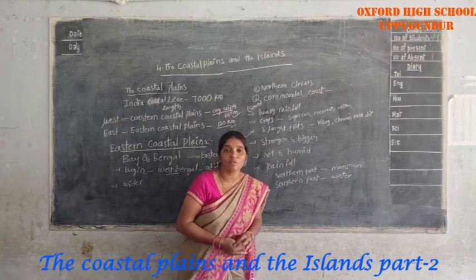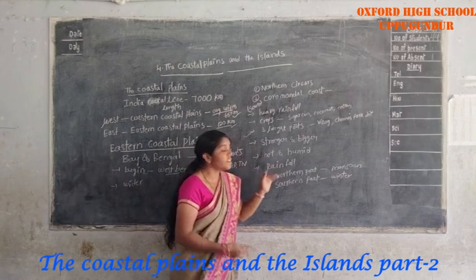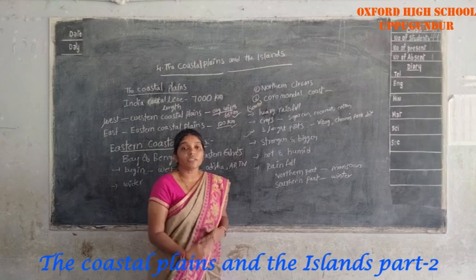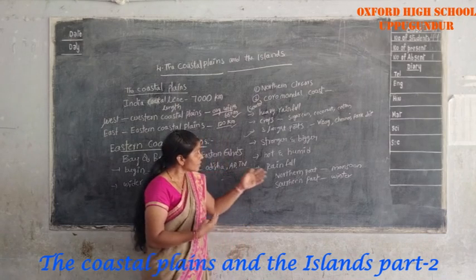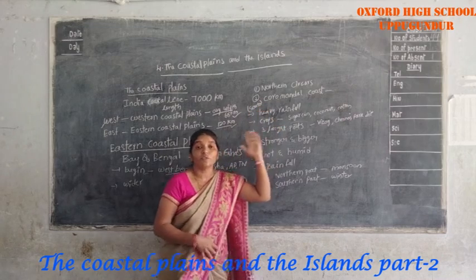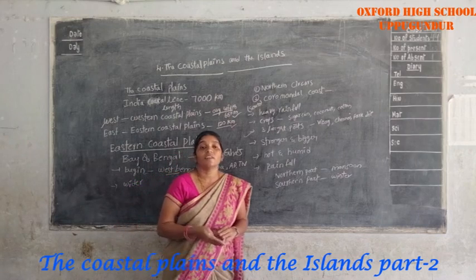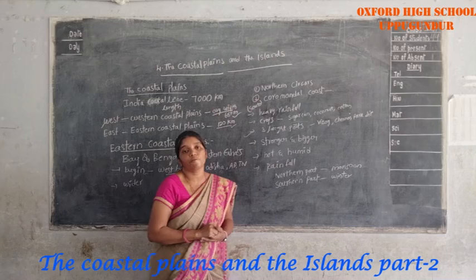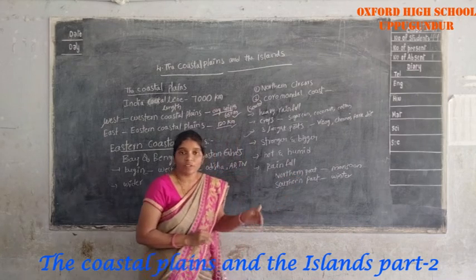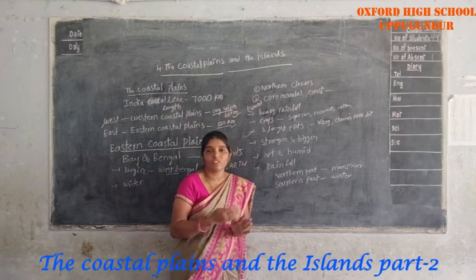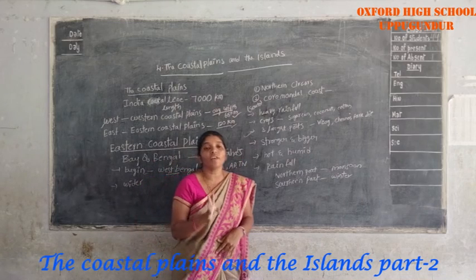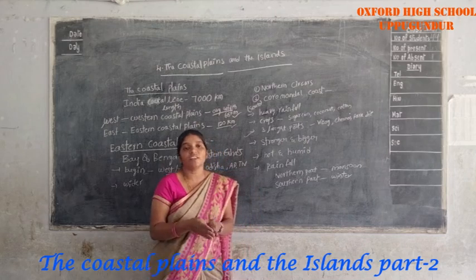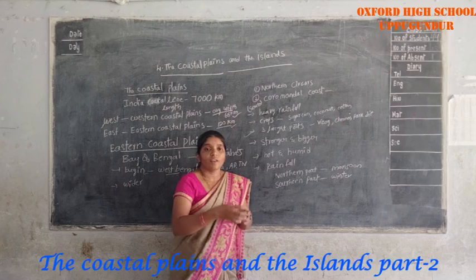In the Eastern Coastal Plains, rainfall differs between north and south. The northern part, called the Northern Circar, receives heavy rainfall during the monsoon season. The southern part of the Eastern Coastal Plains is the only place that receives rainfall in the winter season.